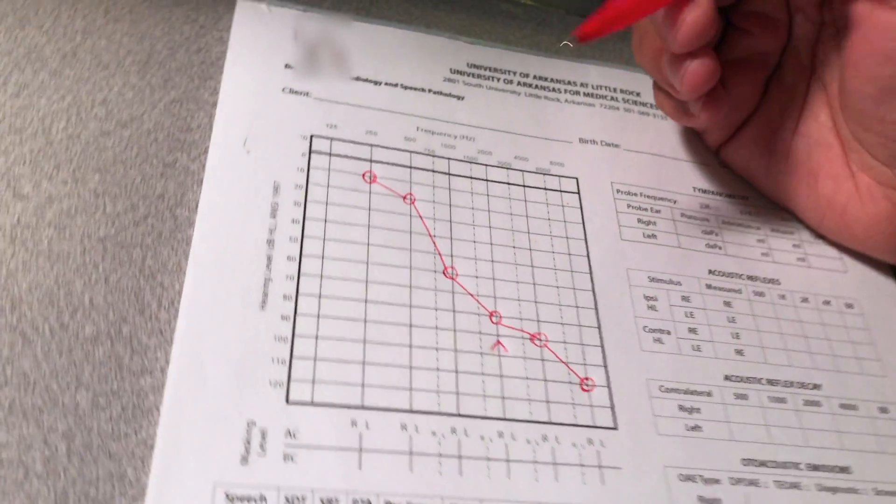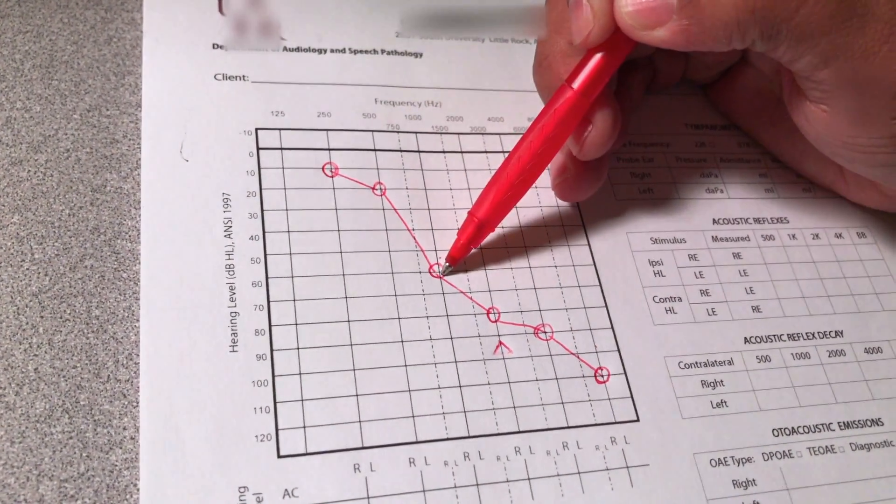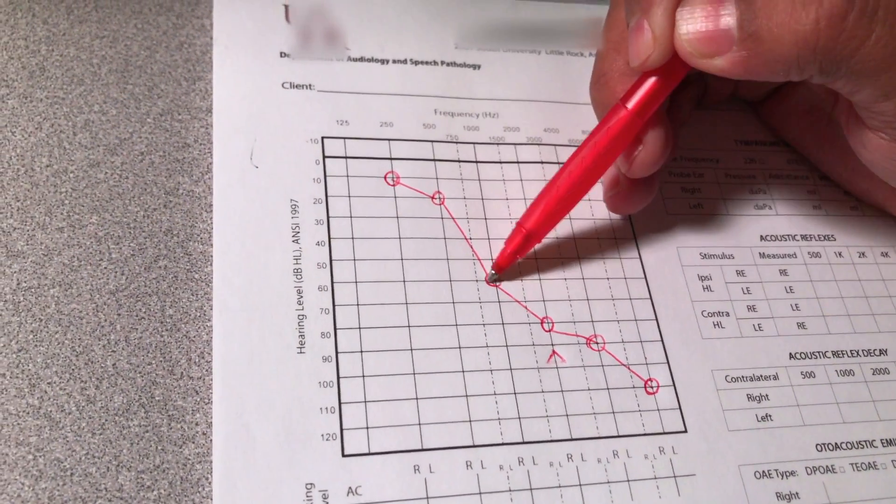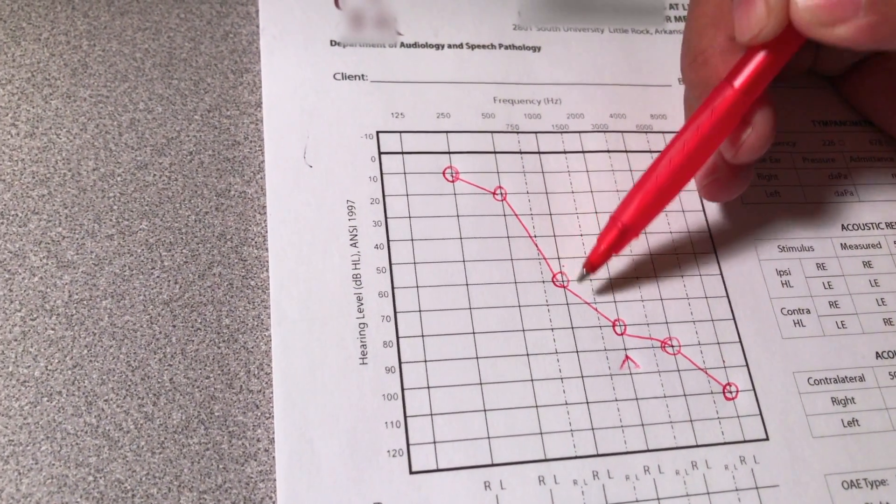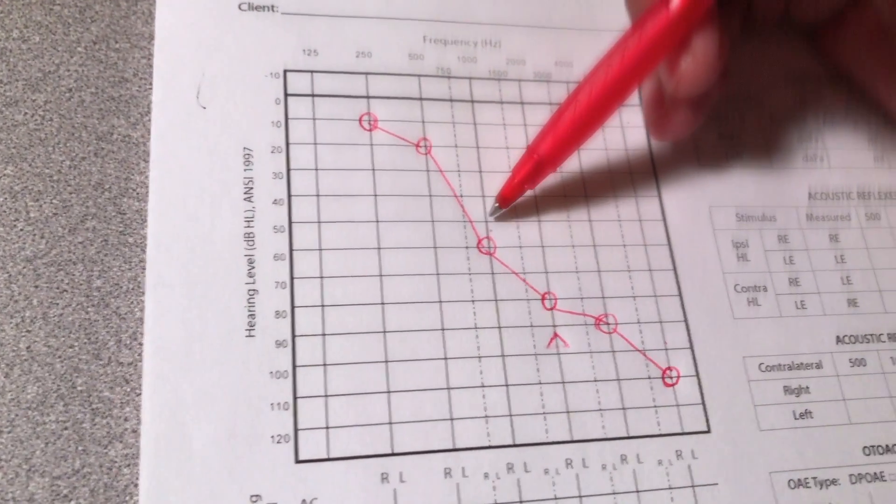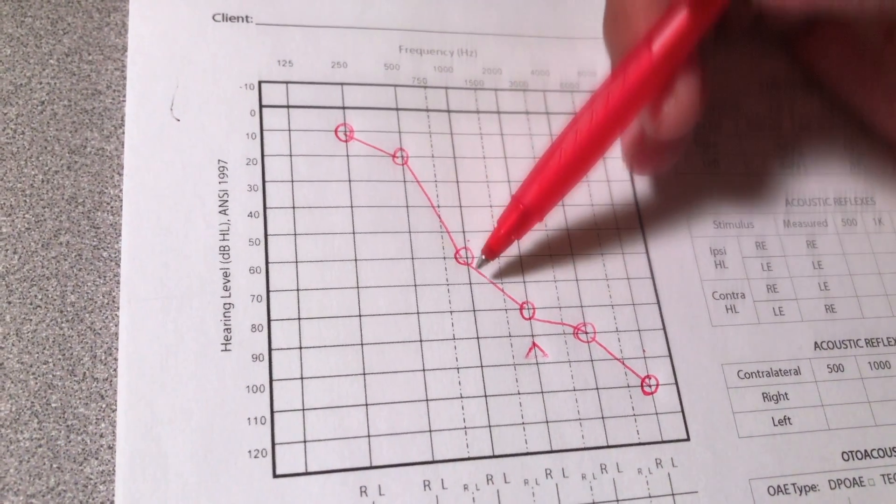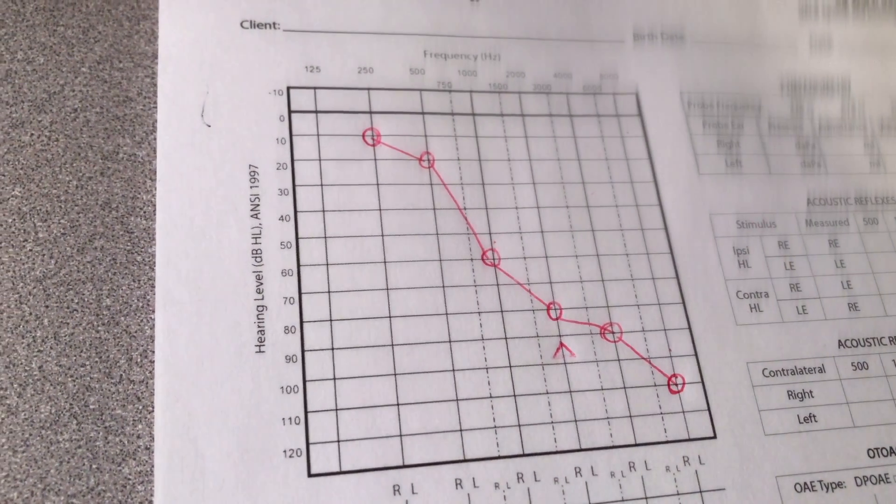Now if you want to measure the threshold at 1000 Hertz, where the person's actual threshold is 60 dB, you need to set the noise level at 70 dB. If the threshold is below 60 dB, anywhere even if it was at 50 dB, set the noise threshold at 70 dB.